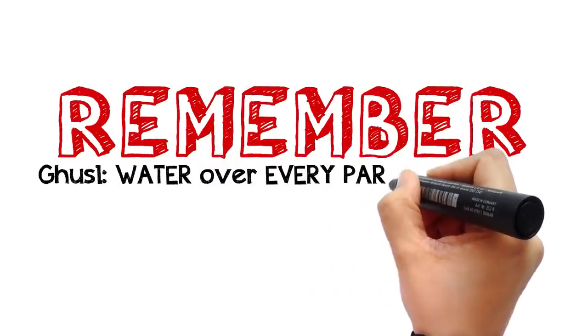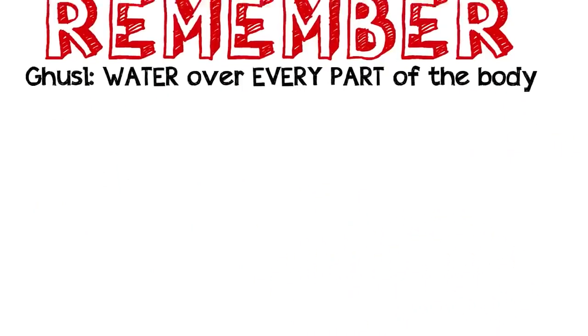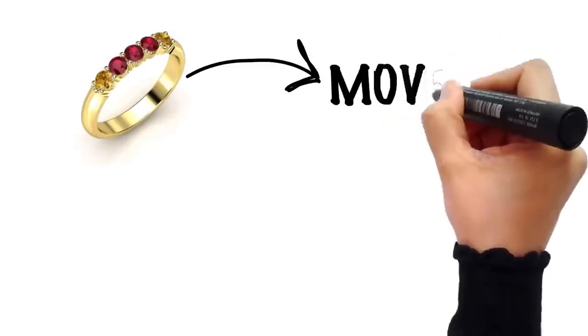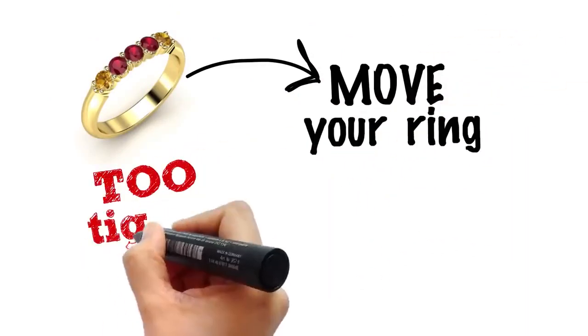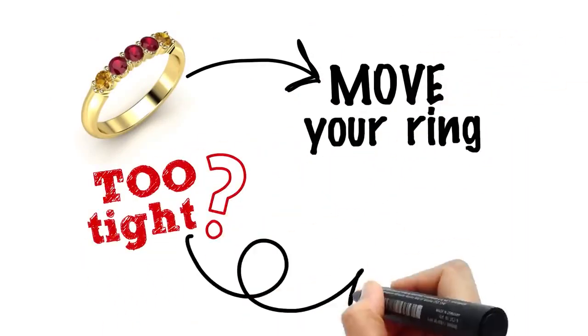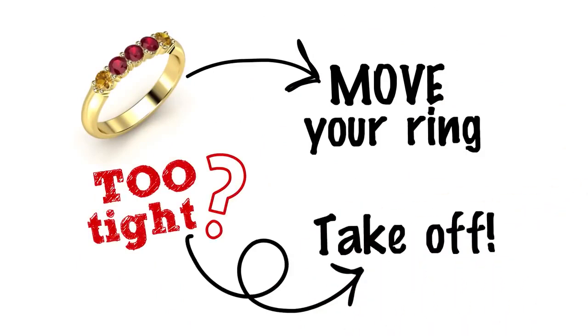Ghusl essentially means letting water run over every part of your body. So if you are wearing a ring, you should move it. And if it is so tight that the water won't reach the skin underneath, then you have to remove it.